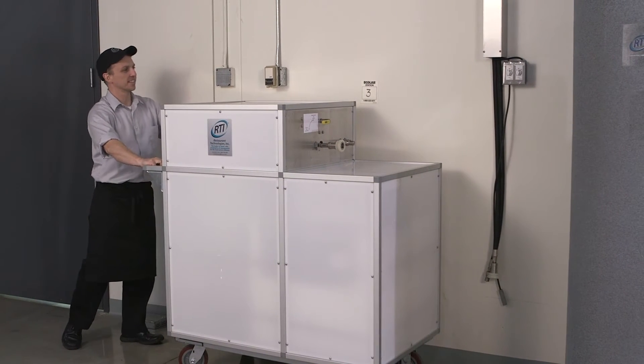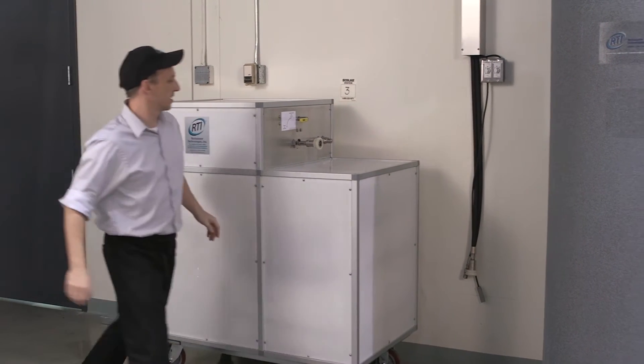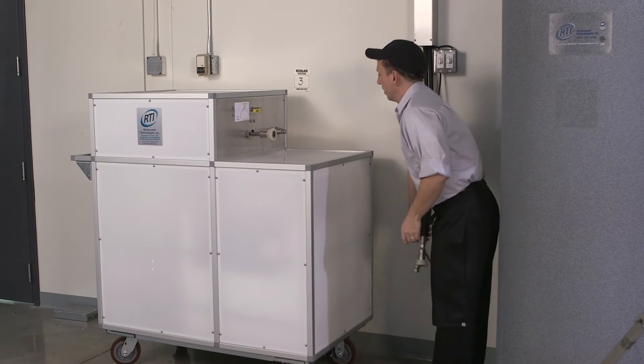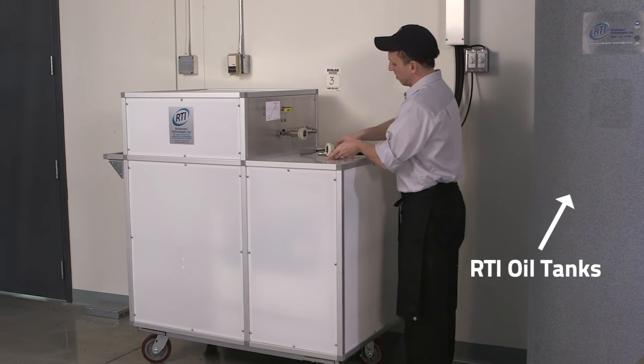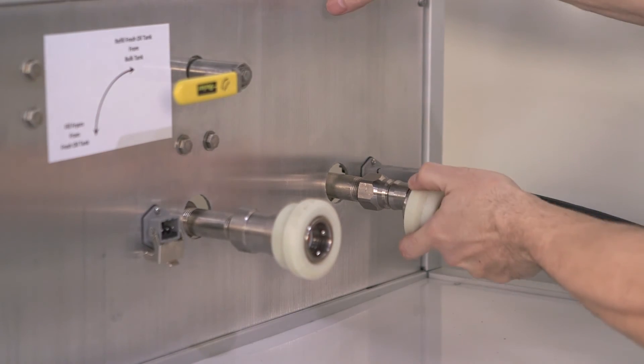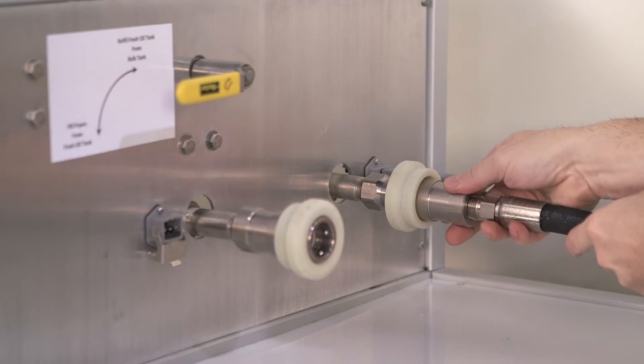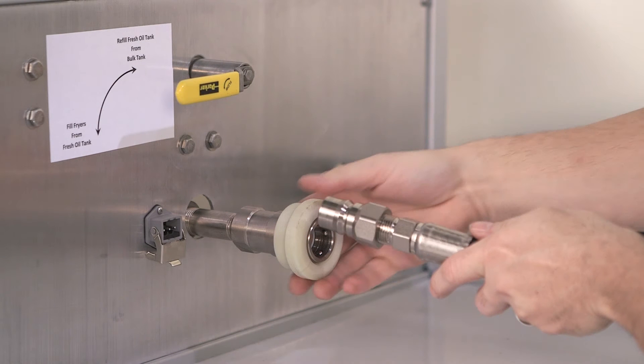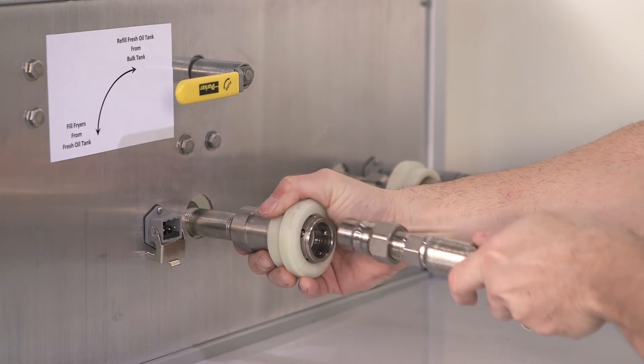The portable oil unit receives fresh oil and disposes of used cooking oil at a fill station located near RTI standard tanks. First, connect the power cord to the unit. Then, attach quick connect hoses to the unit's corresponding valves. Hoses have unique connectors to prevent cross-contamination of fresh and used oil.